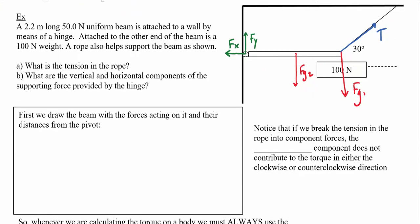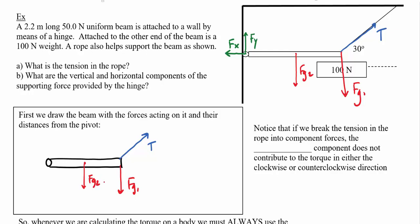I'm going to redraw this system and break all my forces into components. I've got tension pulling along the rope, fg1 at the end of the beam, fg2 at the center, and my supporting y-force upward. I'll break this tension force into components — not x and y, but rather components perpendicular and parallel to the beam. I'll call these T-perpendicular and T-parallel.